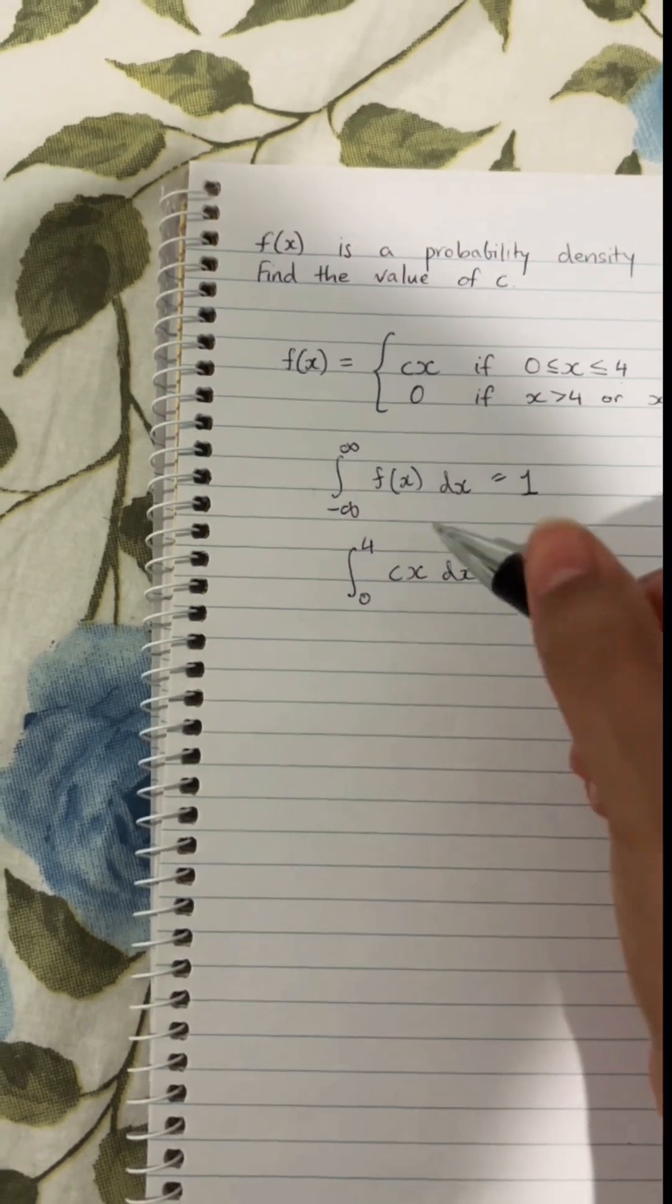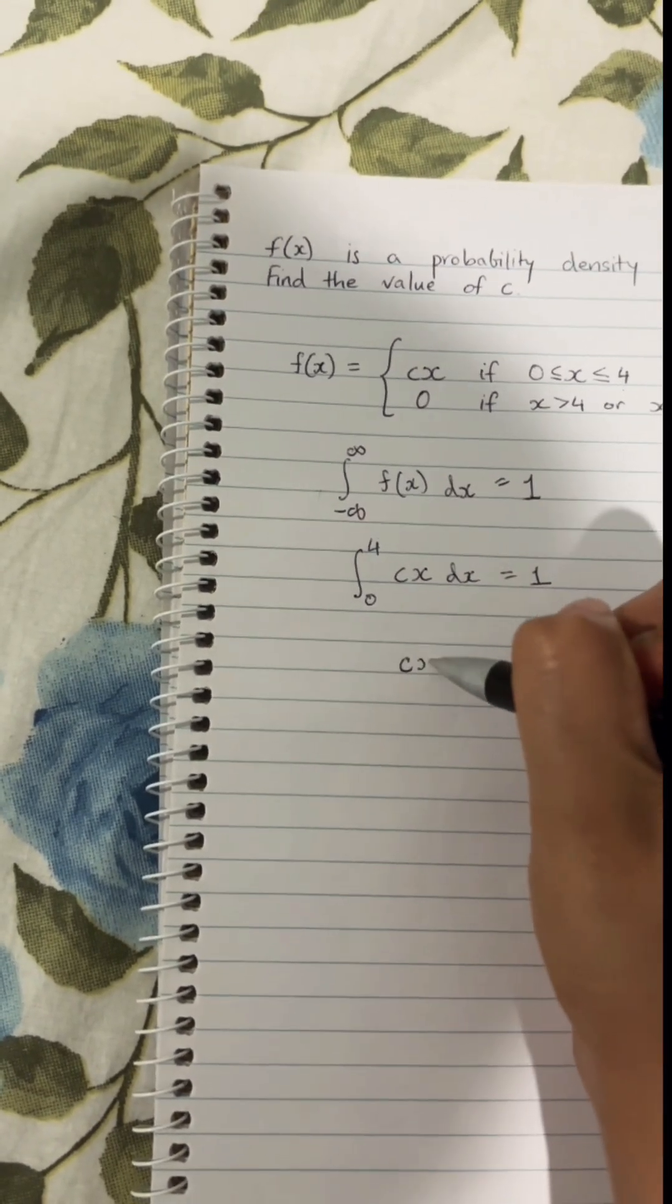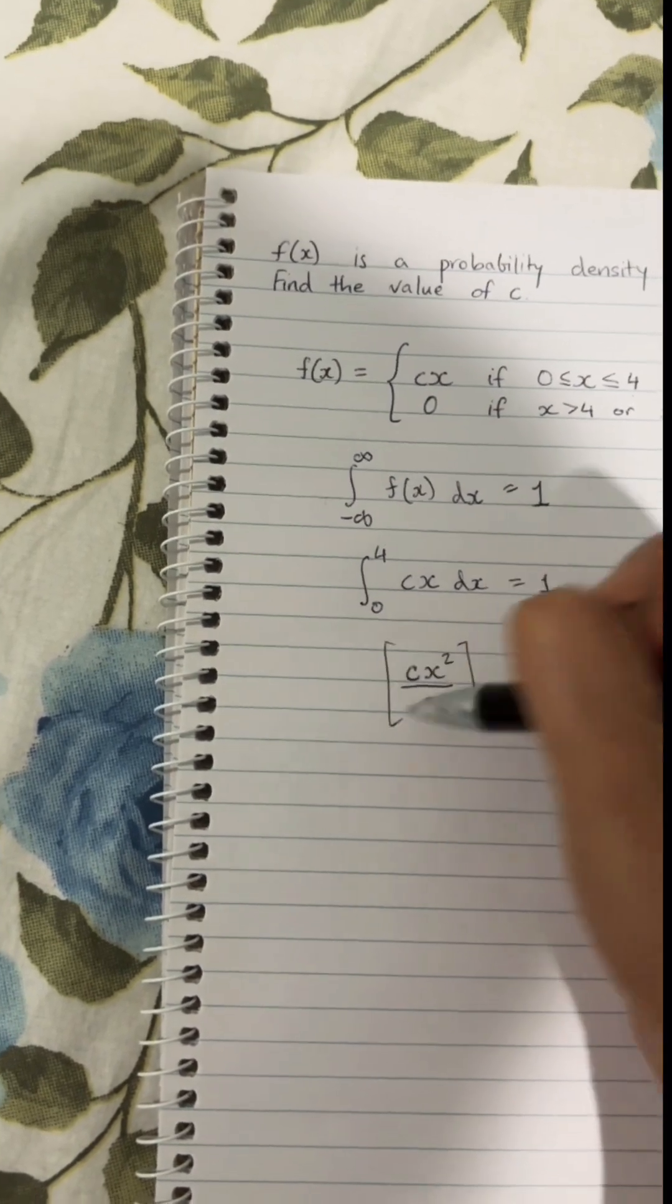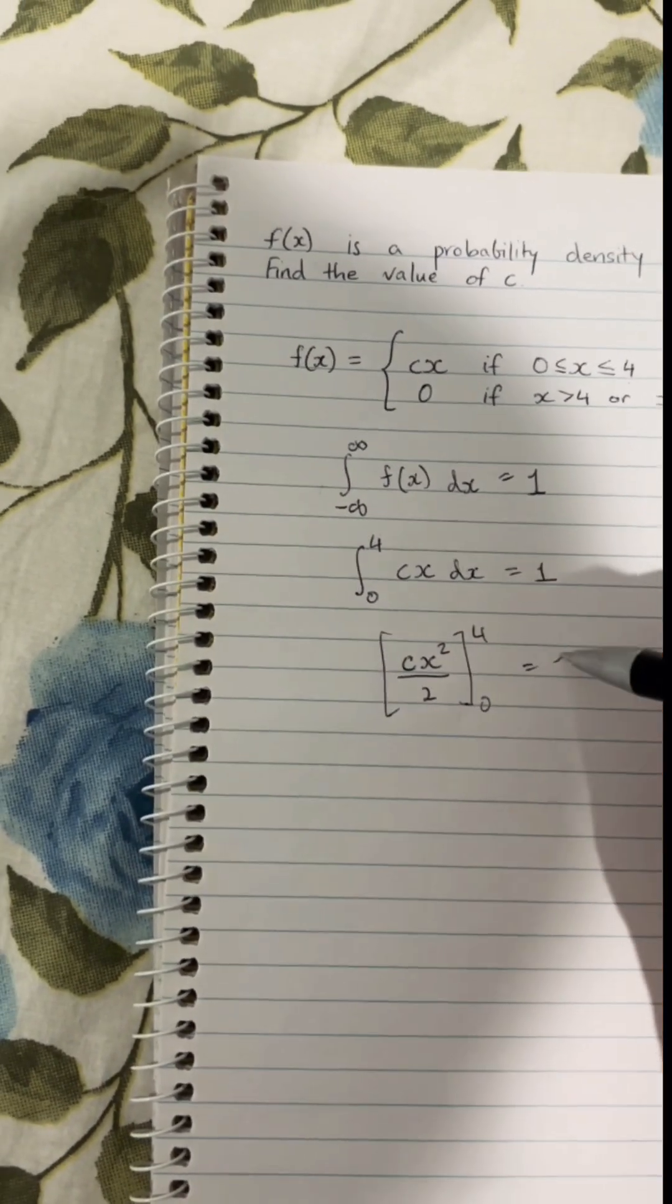So let's integrate this. This will integrate to c times x squared over 2, and now when we sub in 4 and 0, that should give us 1.